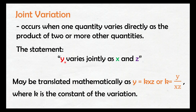Ito yung statement ng joint variation: y varies jointly as x and z. Mapapansin nyo dito, kamukha lang din siya nung direct variation. Ang kaso, hindi lang isang quantity siya mag-vary — dalawa na siya, dalawa or higit pa. So dito dalawa siya: x and z.